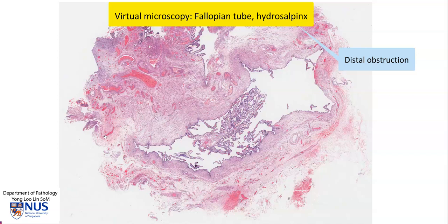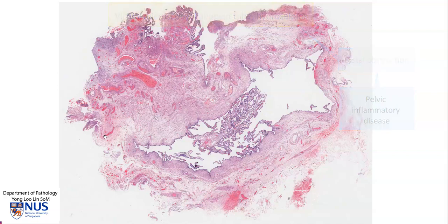The obstruction is often due to pelvic inflammatory disease, which is of course infectious in nature. Here in this dilated fallopian tube, we can first see that the lumen is enlarged due to dilatation, and these are the usual mucosal folds called plicae. In many areas the plicae are lost or flattened — let's have a closer look.